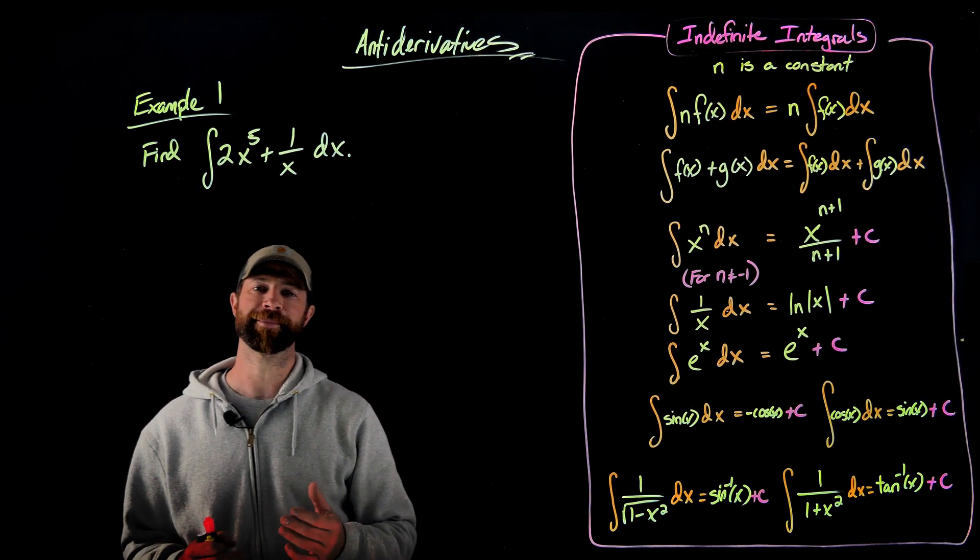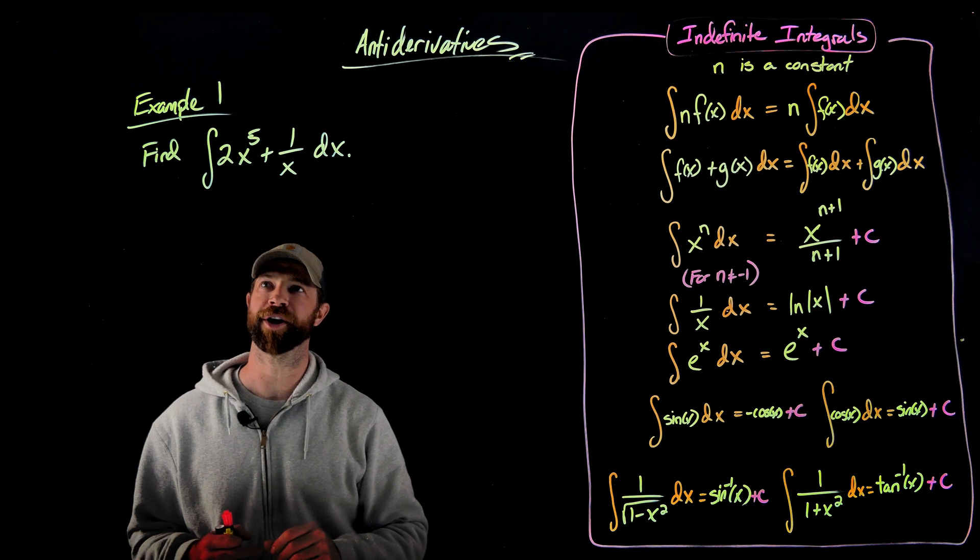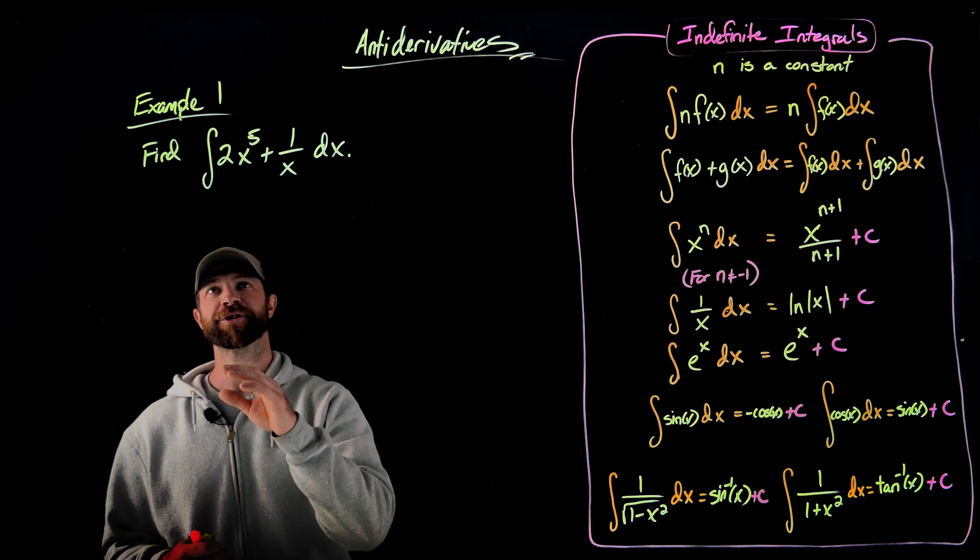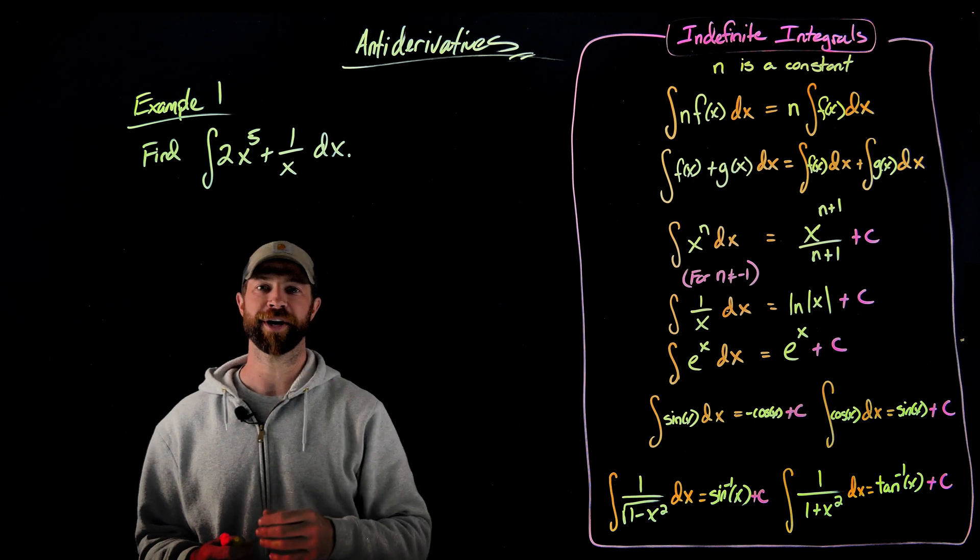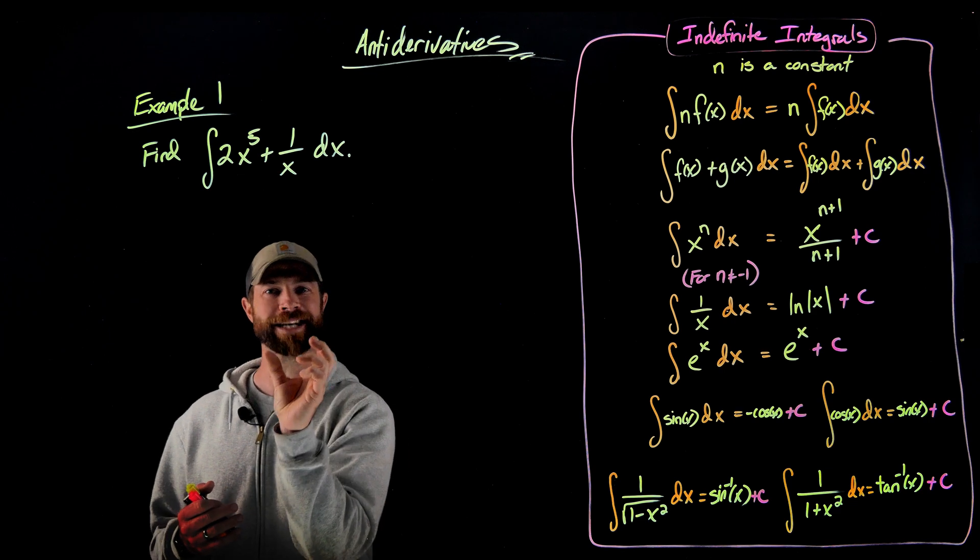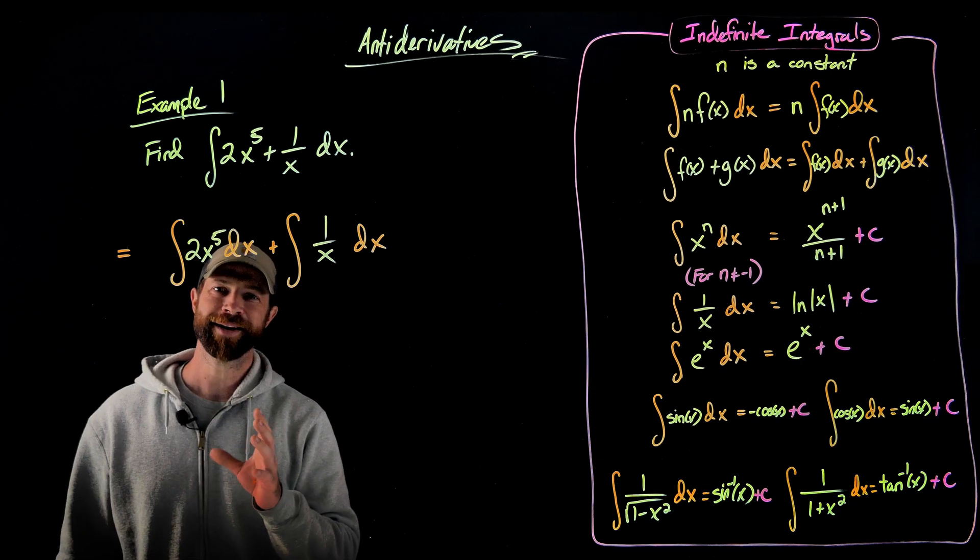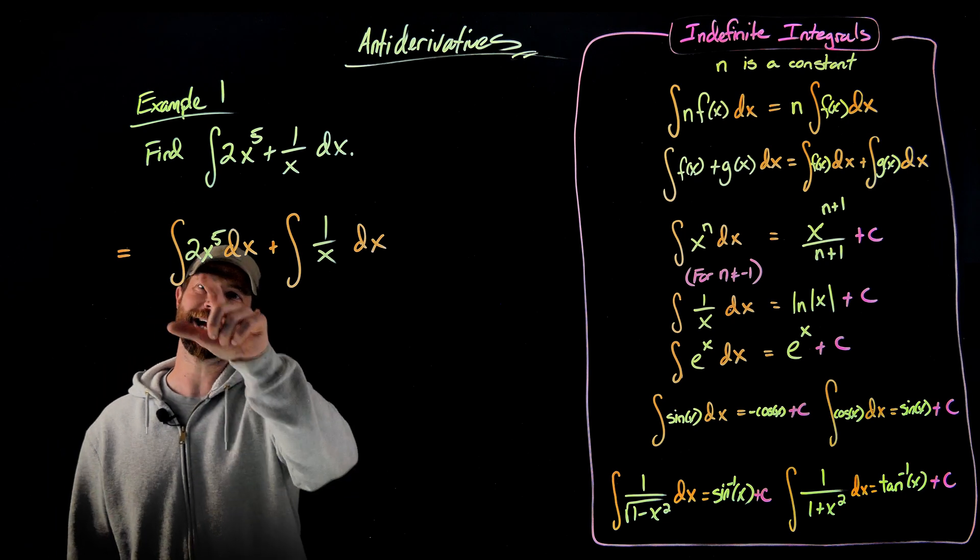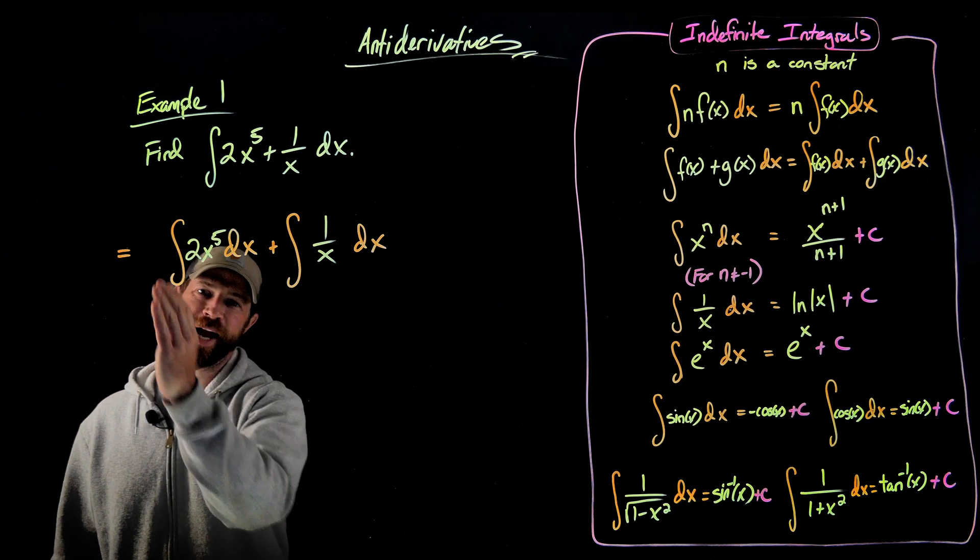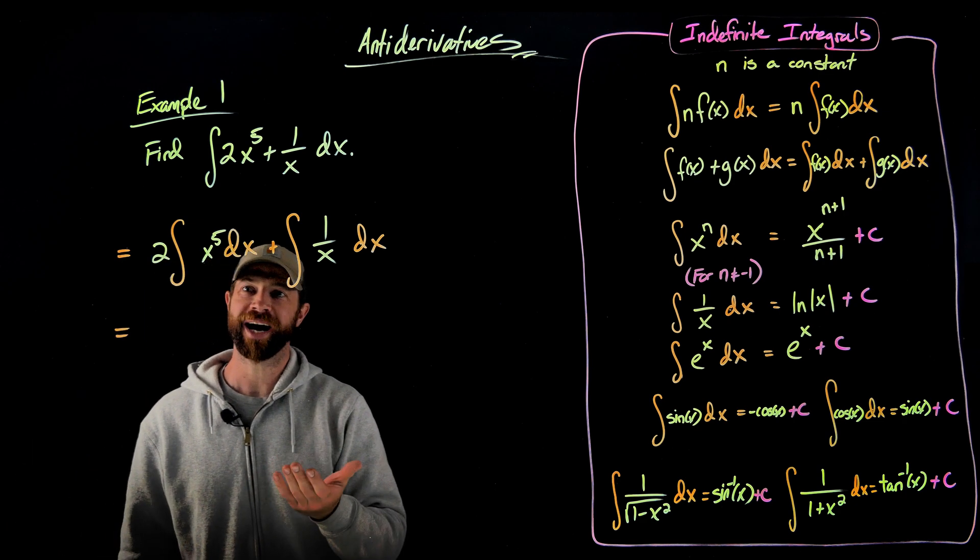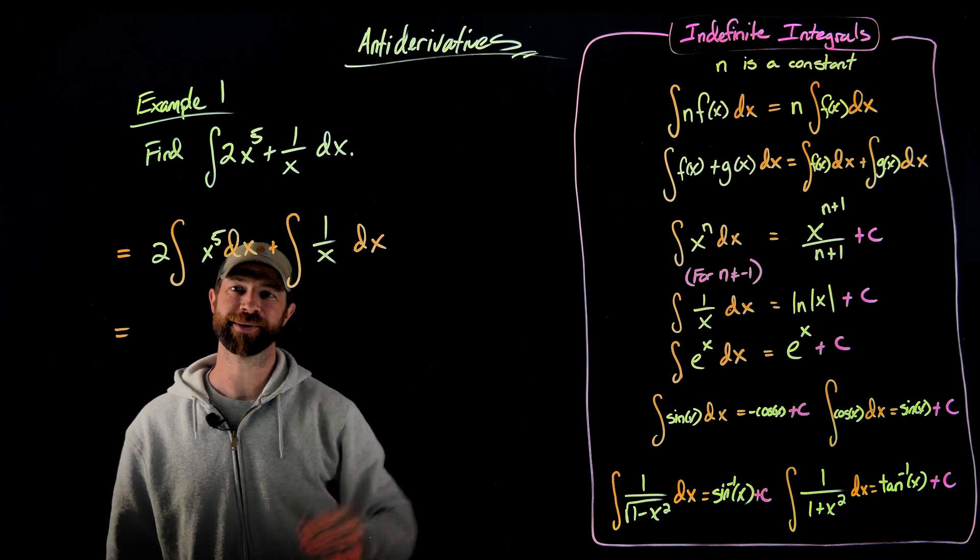All right, let's just do a couple examples and make sure we understand what's going on right here. Here we're being asked to find the indefinite integral for 2x to the fifth plus 1 over x. First and foremost, I can use the sum and difference rules for integration to split this up into two different integrals. And then also, so here I am separating this. Then also I know that I can take this constant of 2 and move it outside this integral right here.